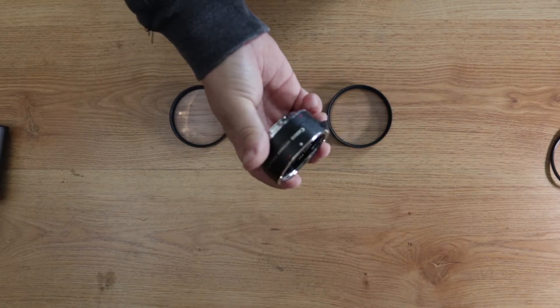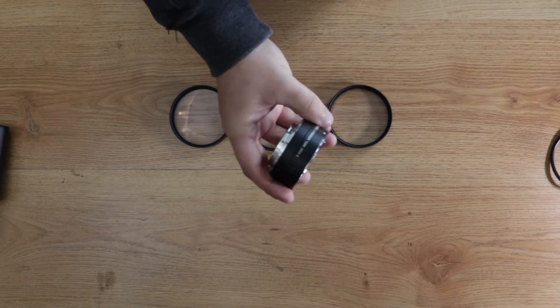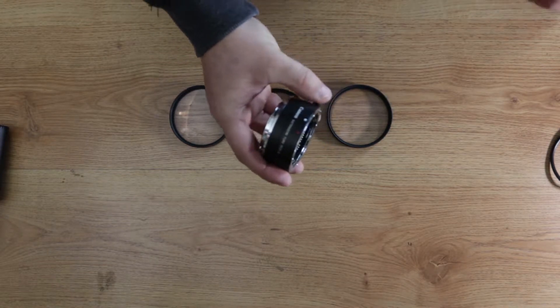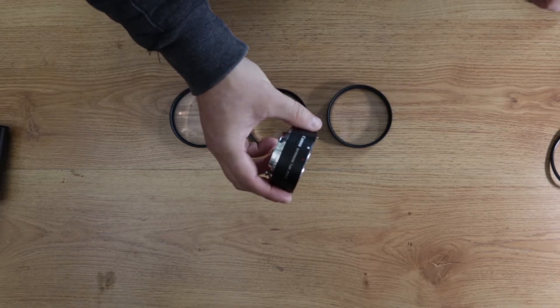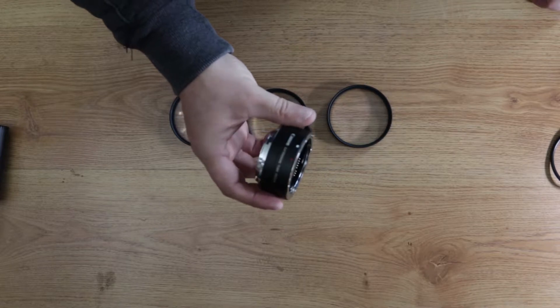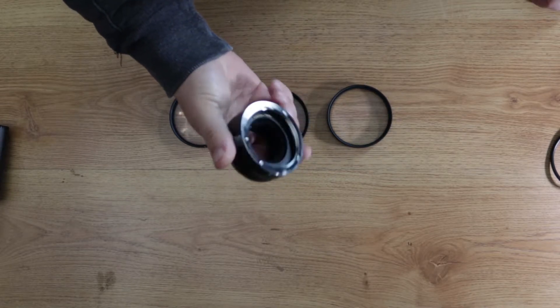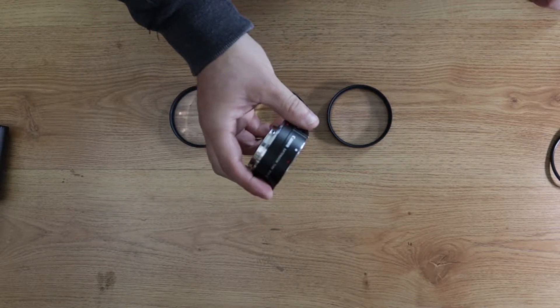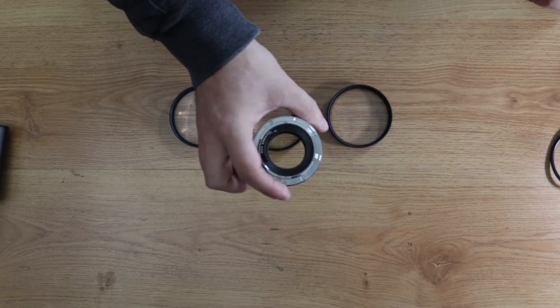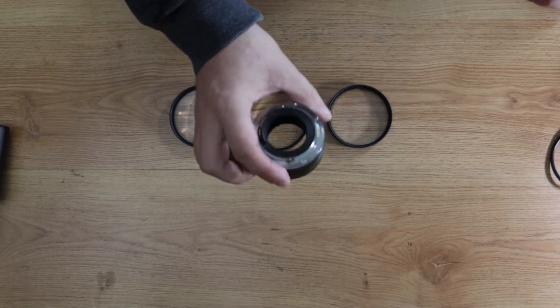They come in varying ranges from lots of different companies. Kenko sells them for pretty much every mount: Canon, Nikon, Pentax, and so on. Every company that I know of has these dedicated to theirs as well. The nice thing about using the actual dedicated ones from the company is it's gonna retain a lot of your lens features, so your auto exposure.